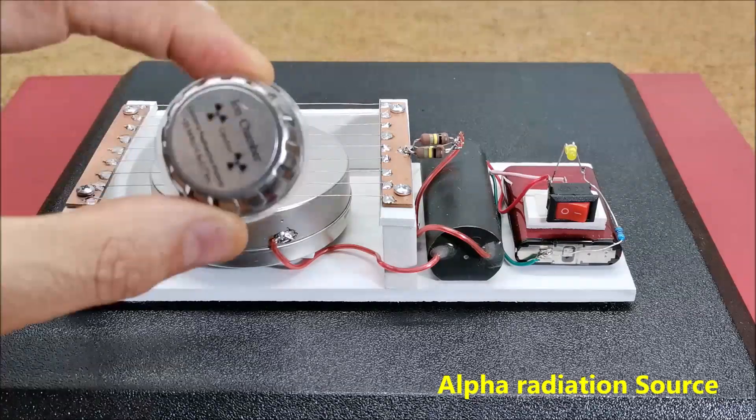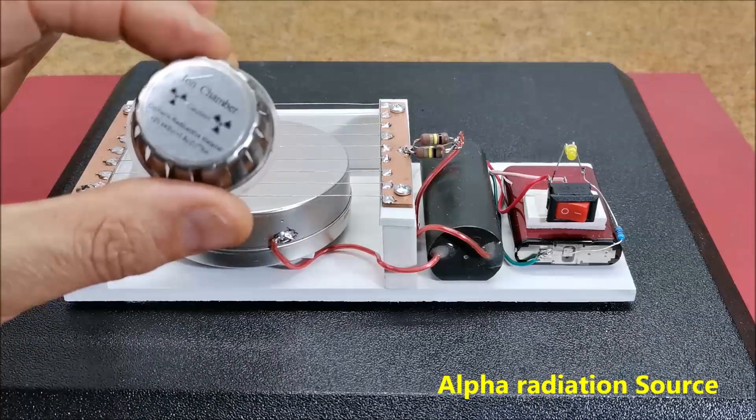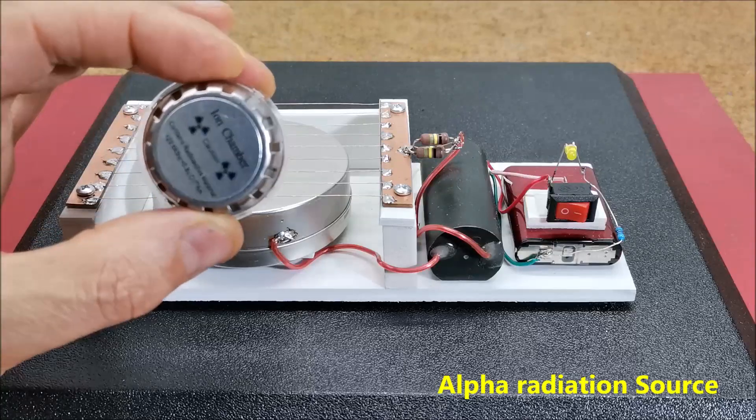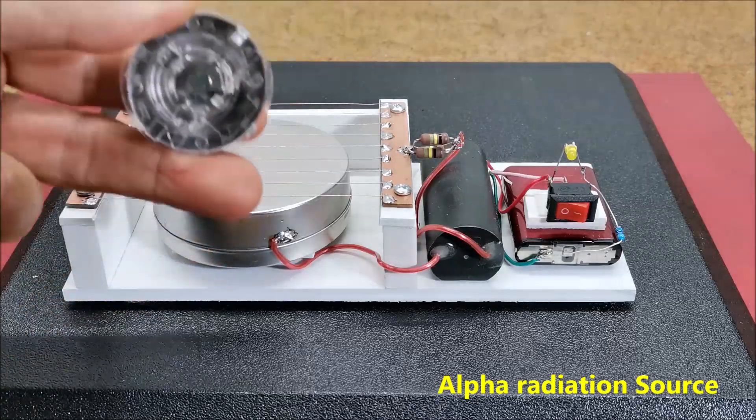As a source of alpha radiation, we use americium-241, which can be found in an old smoke alarm.